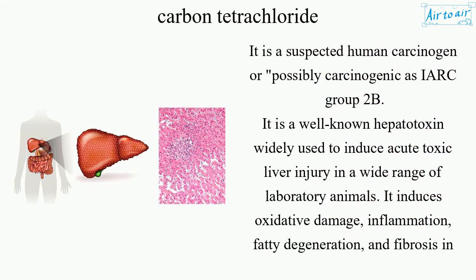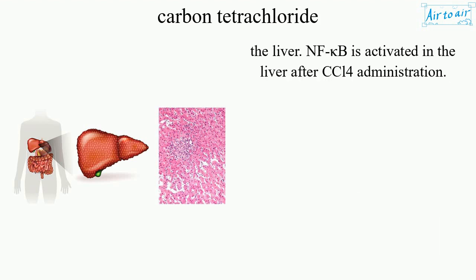It is a well-known hepatotoxin widely used to induce acute toxic liver injury in a wide range of laboratory animals. It induces oxidative damage, inflammation, fatty degeneration, and fibrosis in the liver. NF-κB is activated in the liver after CCl4 administration.